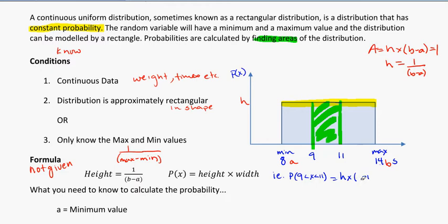Don't want a negative number. 11 minus 9. So that's going to be my height times 2. So first thing I need to do is actually find my height.